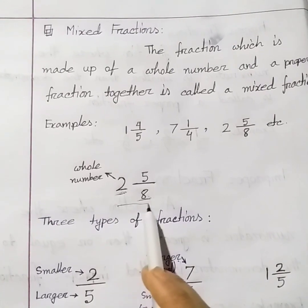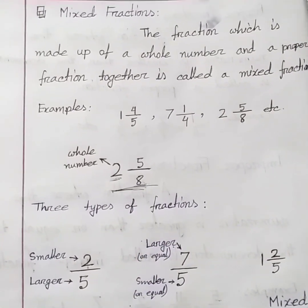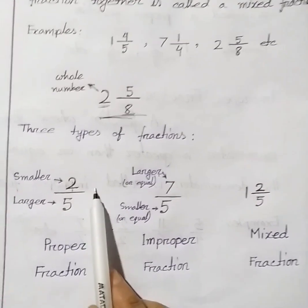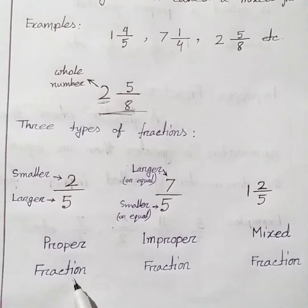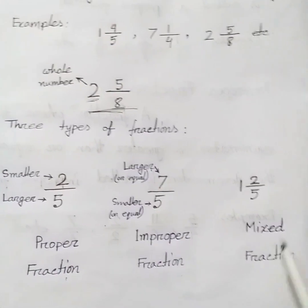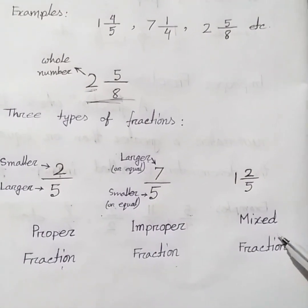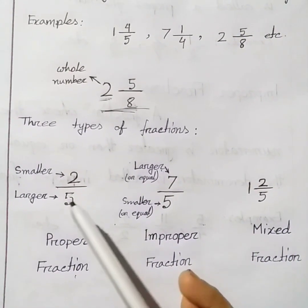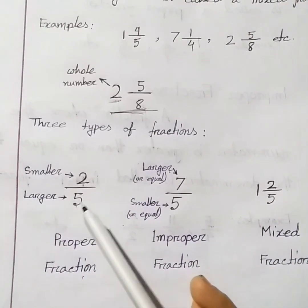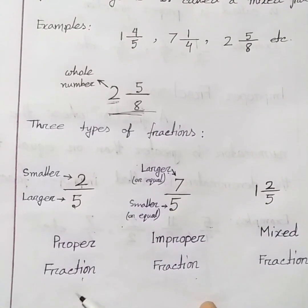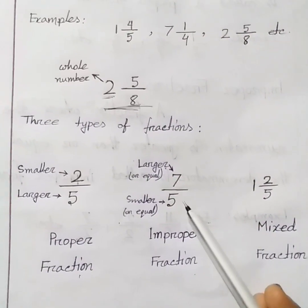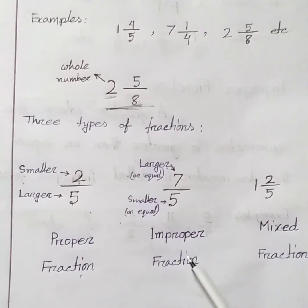Now you can see three types of fractions. Here, 2 by 5 is a proper fraction. Here, 7 by 5 is an improper fraction — 7 is greater than 5. And here, 1 whole 2 by 5 is a mixed fraction. In 2 by 5, the numerator 2 is smaller than the denominator 5, that's why it is a proper fraction. And 7 is greater than 5, that's why 7 by 5 is an improper fraction.